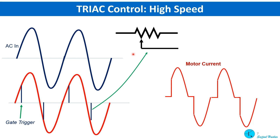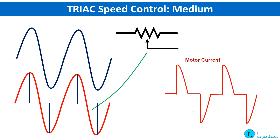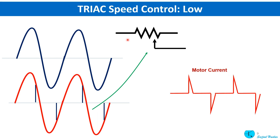We will analyze three different conditions: high speed, medium speed, and low speed. For high speed, the variable resistor is kept low, the gate is triggered almost at the beginning of each cycle, and almost full current goes through the motor. At medium speed, the variable resistor is kept halfway, trigger pulses are in the middle of each cycle, and the motor receives about half the normal current. At low speed, the variable resistor is kept at its highest, trigger pulses are almost at the end of each cycle, and very low current flows through the motor.